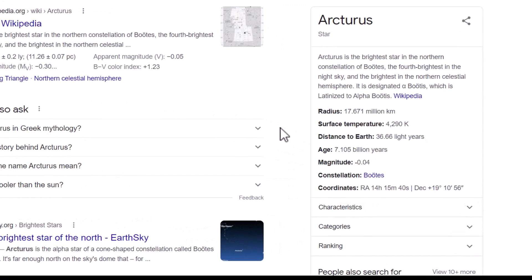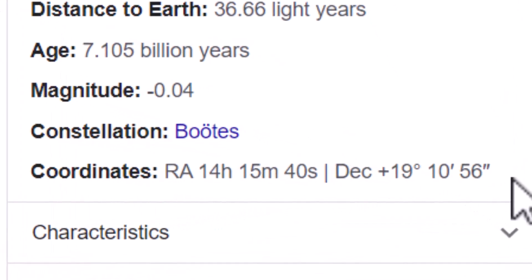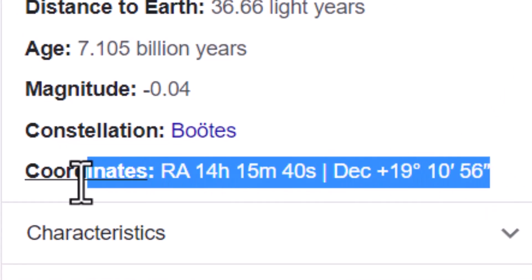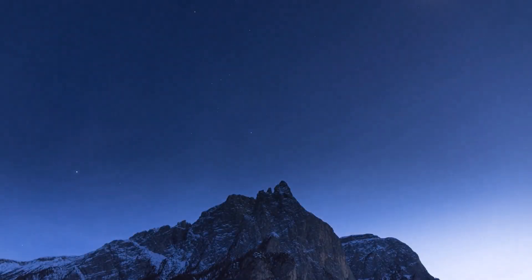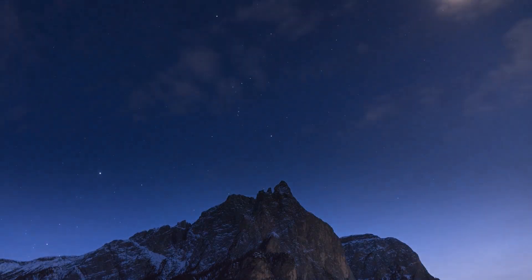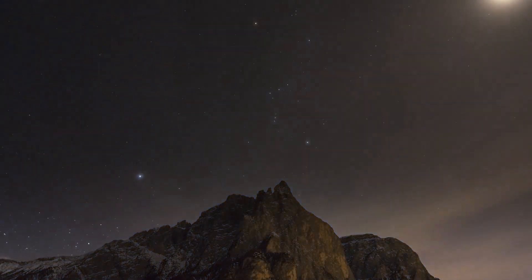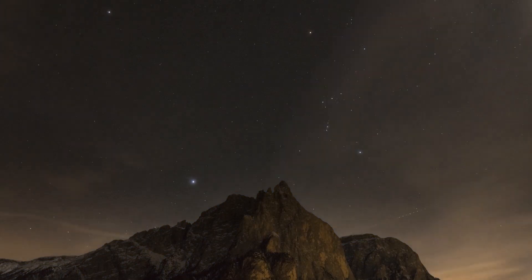For instance the star Arcturus has a right ascension of 14 hours 15 minutes and 40 seconds and a declination of plus 19 degrees 10 arc minutes and 56 arc seconds. This means Arcturus will pass over an observer's meridian exactly 14 hours 15 minutes and 40 seconds after the right ascension zero point has.